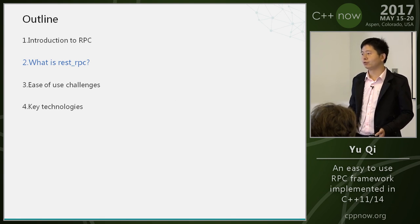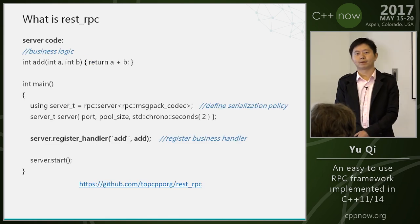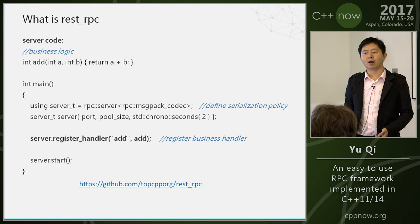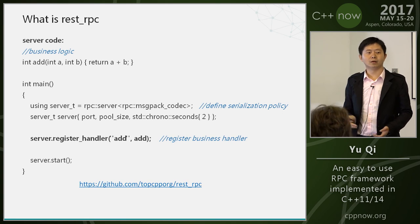Let's go through a quick example of REST-RPC. This is the server code. First, define the business logic, then register the business logic, and you have finished the work — you have provided an RPC service. It's very simple and short.